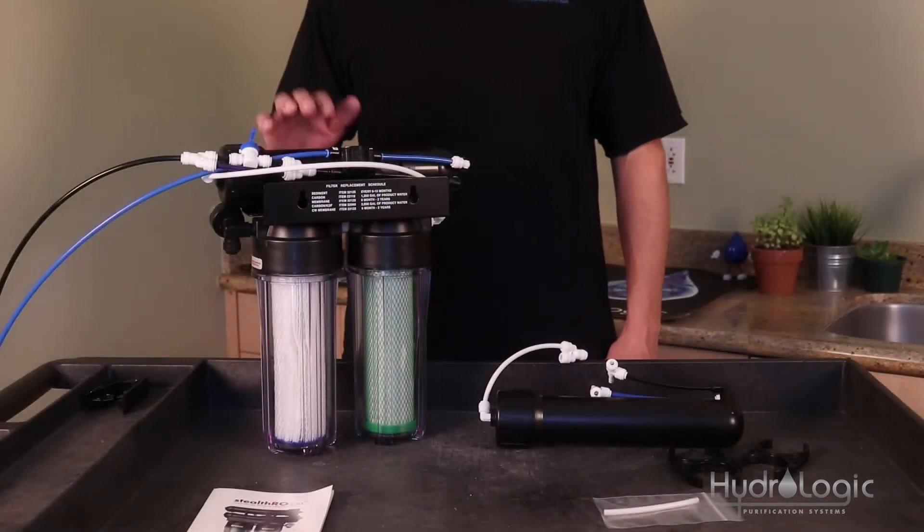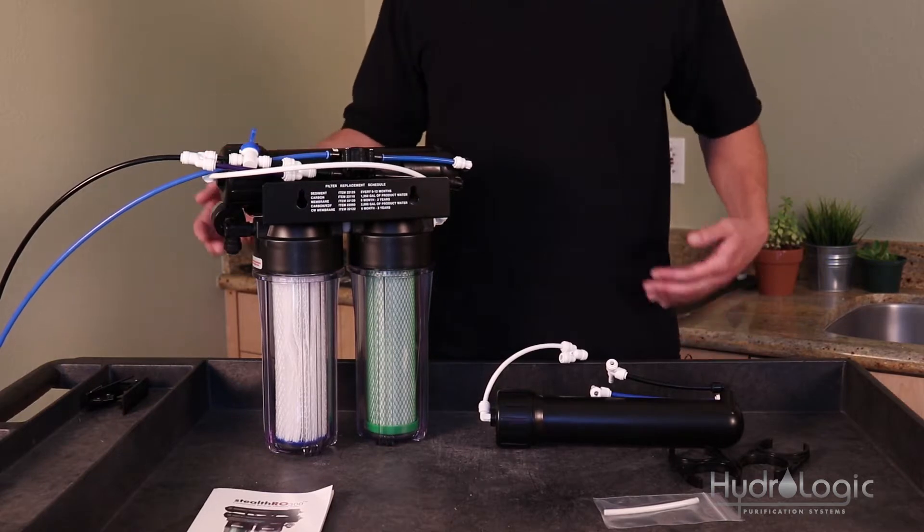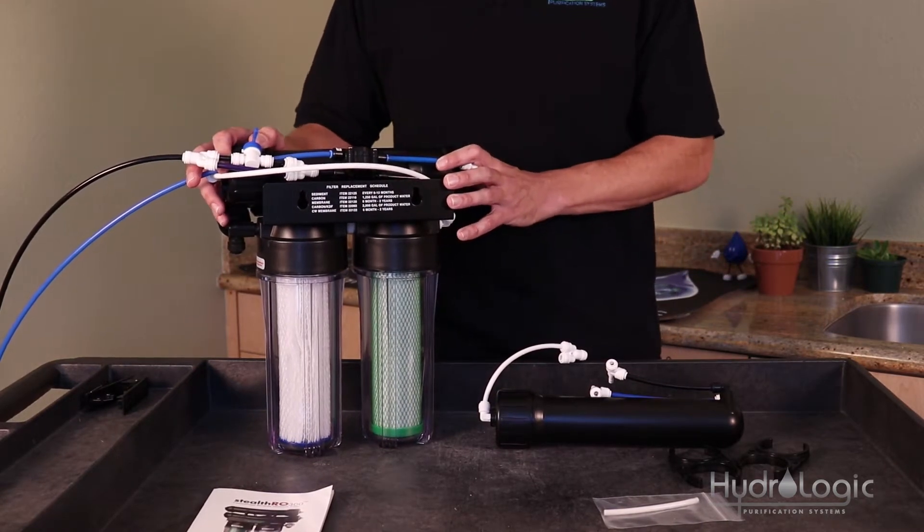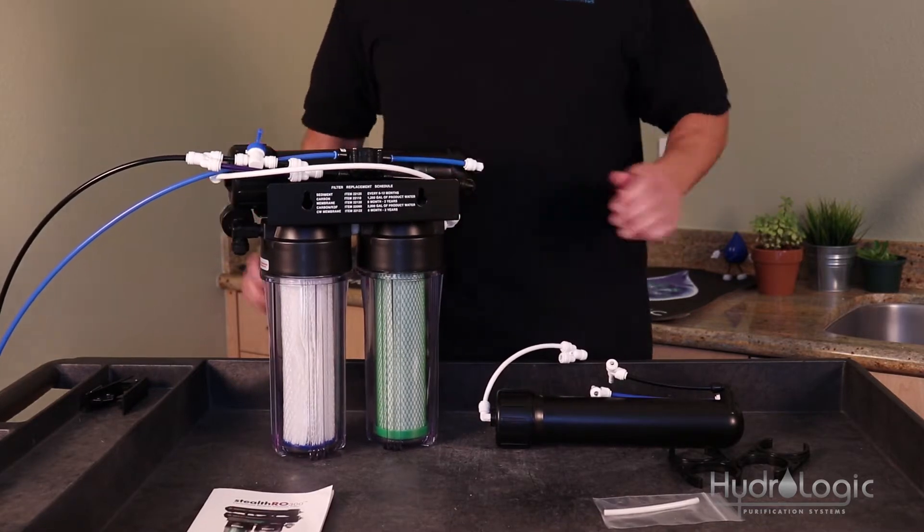So, the first thing you want to do is turn off the source water. If you have this thing mounted up on a wall, I recommend taking off the excess tube and getting it off the wall so you can flip it around backwards and see what you're doing. It's a lot easier to work with that way.